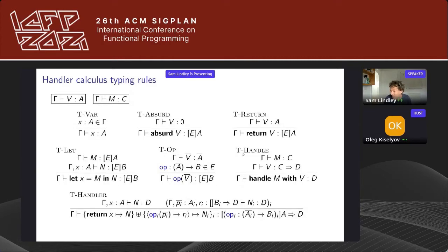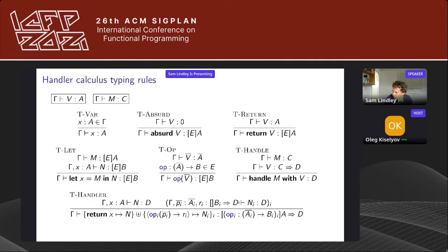Here are the typing rules. There is a judgment for values and a judgment for computations. Variables and absurd are standard; return and let are standard too — the effects in let must be the same in both components. When we have an operation it needs to be in the effect of the computation type. Handling is like a form of application. The complicated one is the handler rule, but it's basically what you'd expect. This is a deep handler, meaning the return type of the resumption is the final computation type D — the handler automatically wraps itself around the resumption.